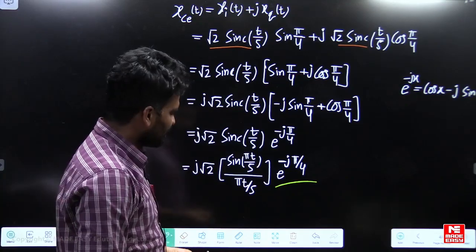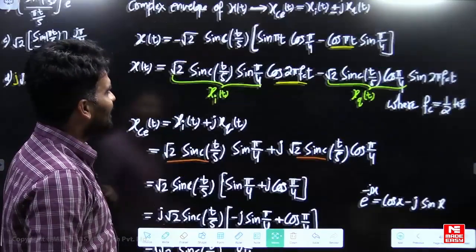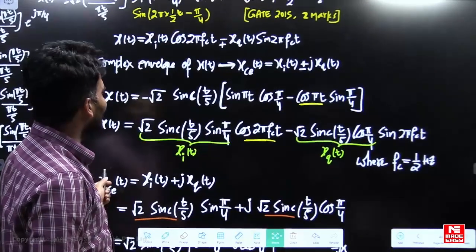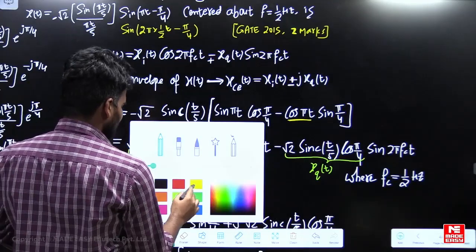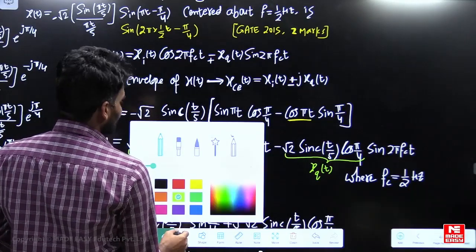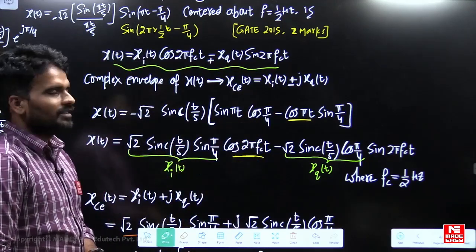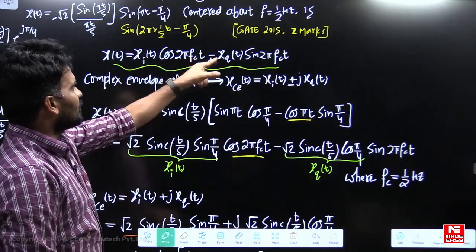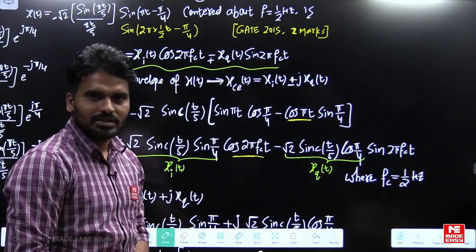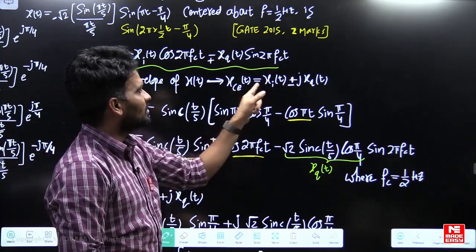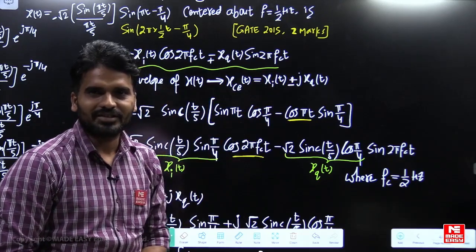In summary, this is how you find the complex envelope of a bandpass signal. Whenever a question asks for the complex envelope, first write the given signal in the standard form with in-phase and quadrature components, then apply the formula x_e(t) = x_i(t) + j·x_q(t). Thank you.